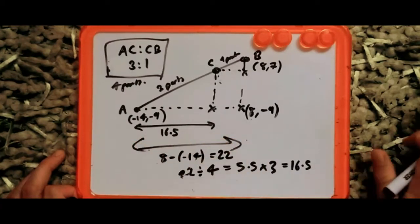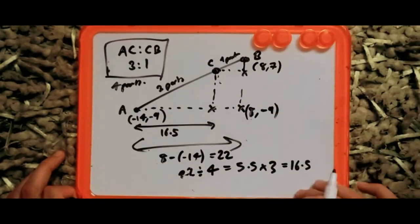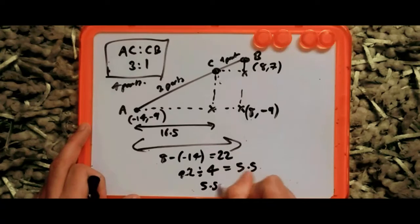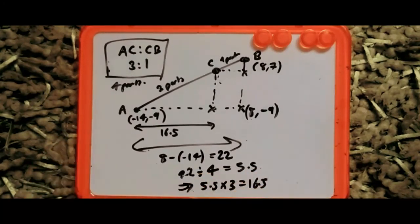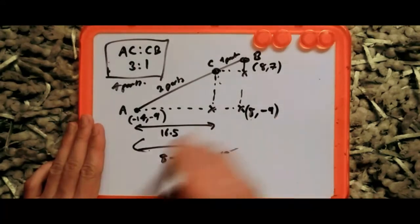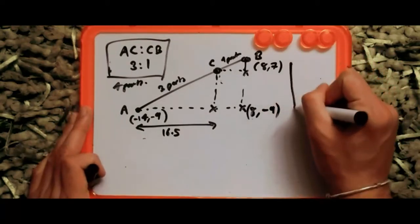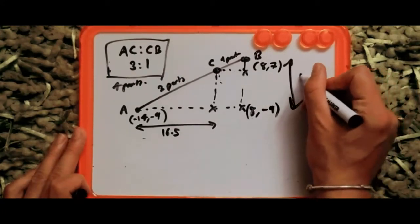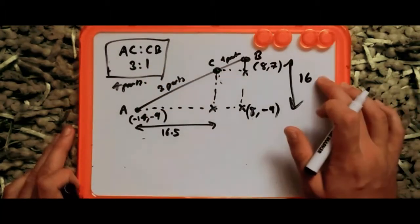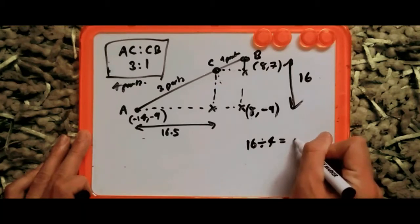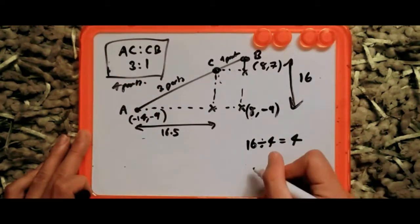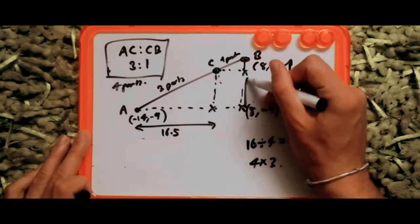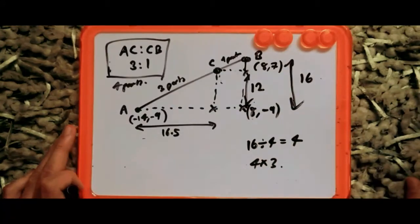So the distance along the x-axis from A to C is 16.5. Now let's try the height — the y-axis. The difference between 7 and minus 9: 7 minus minus 9 gives us 16. This is easily divisible by 4: 16 divided by 4 gives us 4, which represents one part. To get three parts, multiply by 3: that gives us 12.